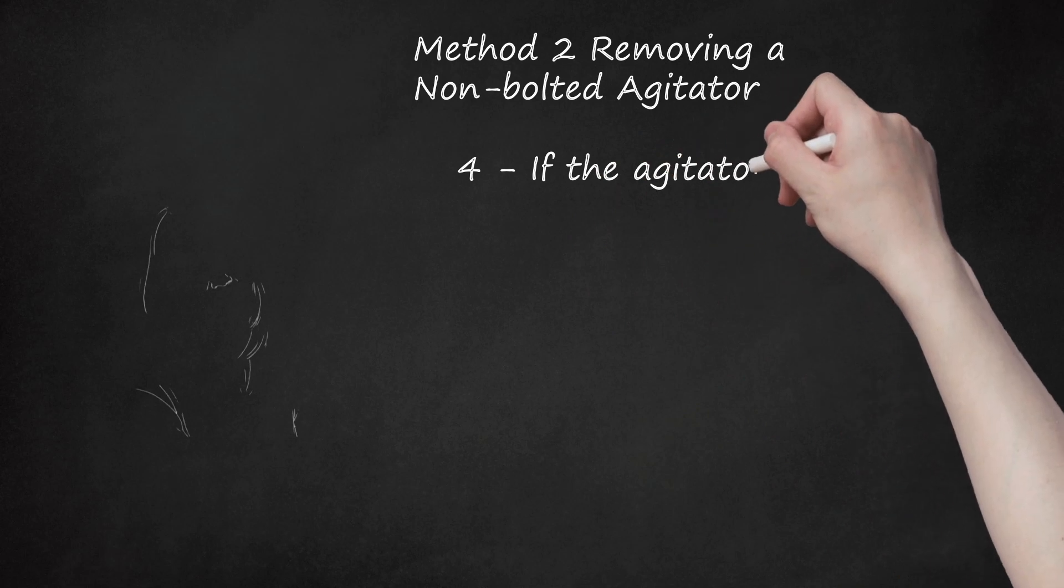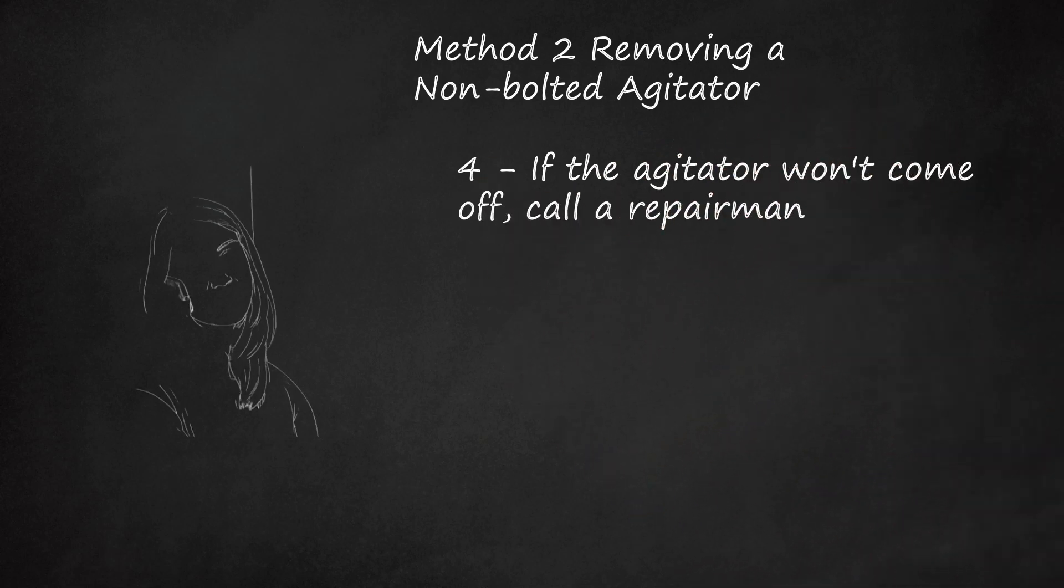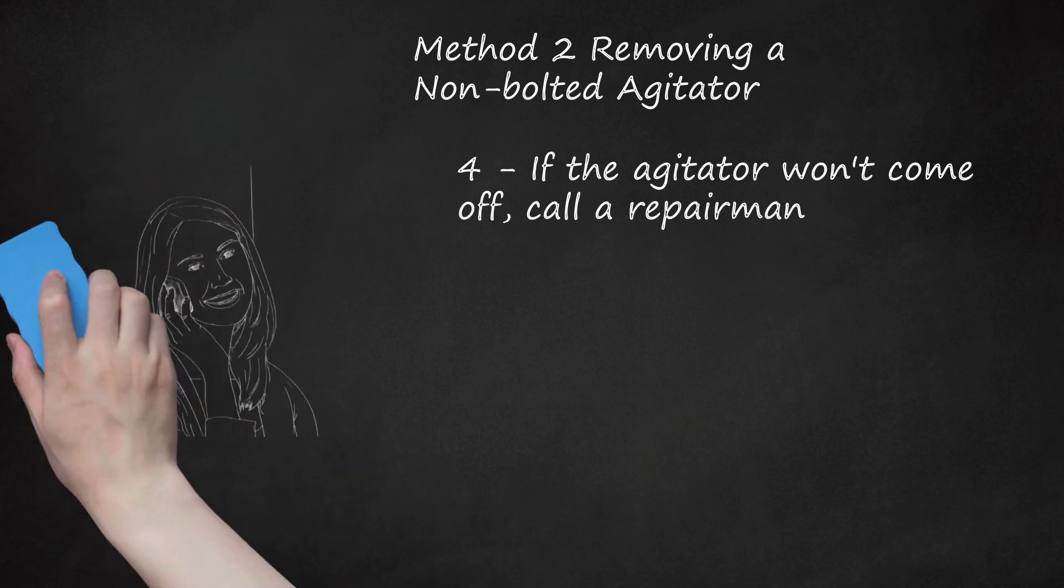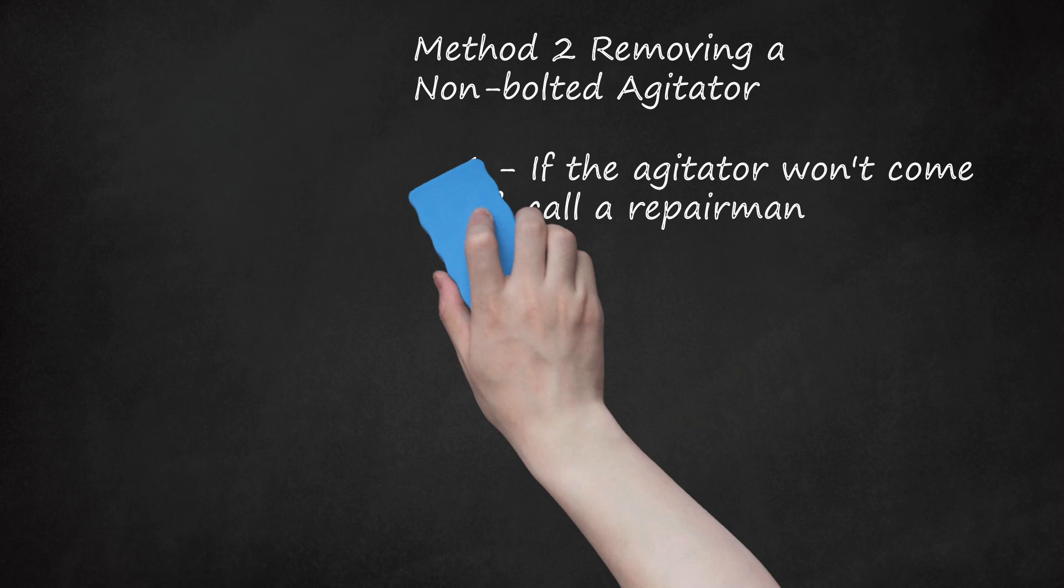Step 4: If the agitator won't come off, call a repairman. The agitators in many models of washing machine, particularly more recent ones, aren't designed to be removed normally. Instead, they require special tools or techniques that only trained service people have access to. In these cases, you may not be able to remove the agitator even if there is no obvious bolt holding it in place, so your only option is to enlist the help of a mechanic. GE's customer service line is available at 1-800-432-2737. Service appointments can also be scheduled online via the support section of the official GE website.